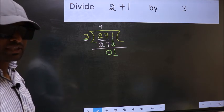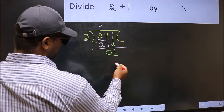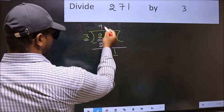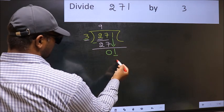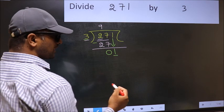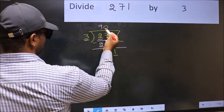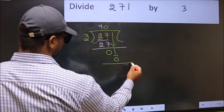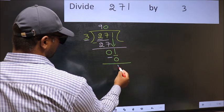Instead, what you should think of is: what number should we write here? If I take 1 here, I will get 3. But 3 is larger than 1. So what we should do is take 0. So 3 into 0 is 0. Now you should subtract. 1 minus 0 is 1.